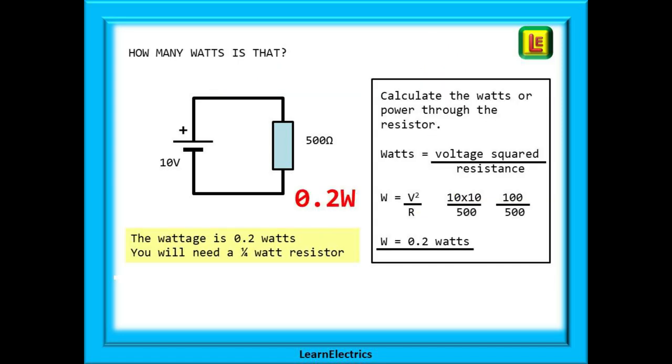So our next question: how many watts is that? The power in a circuit is measured in watts and it is important that we do not put too much power through electronic components. A resistor that has a maximum power rating of half a watt may be damaged if the watts exceed this, so we need to know.